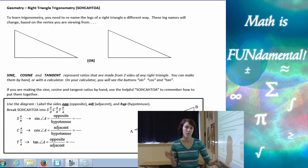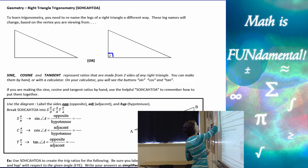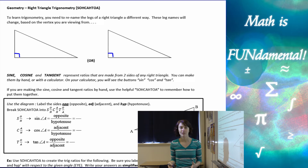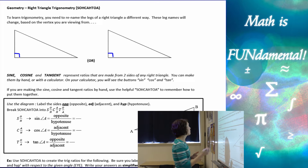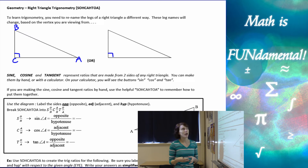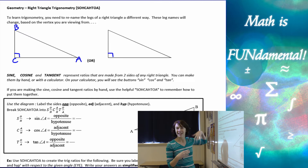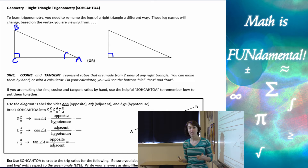When we talk about trigonometry — sine, cosine, and tangent — we have to have a right triangle when we're doing right triangle trigonometry, which is our lesson today. When we do this, we have to look at right triangles a little differently. If we have triangle ABC where C is the right angle, instead of just talking about legs and the hypotenuse, we need to talk about the different sides pertaining to a specific angle.